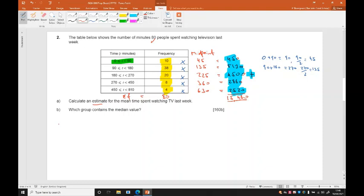And then to find the mean, remember it's an estimation, so it's 15,480 divided by the total frequency, 80. This should give us quite a nice answer. It does: 193.5 minutes.